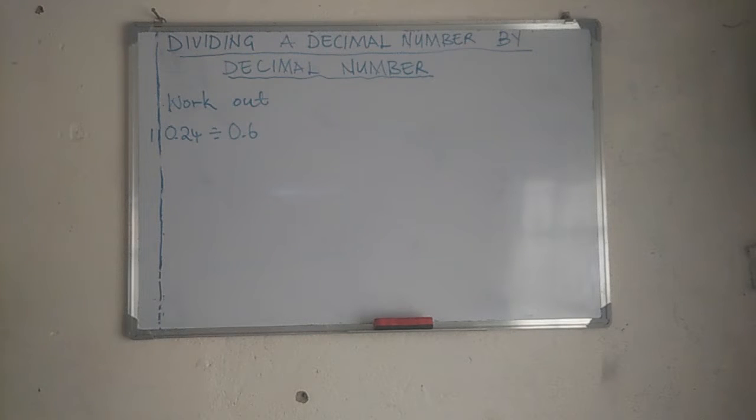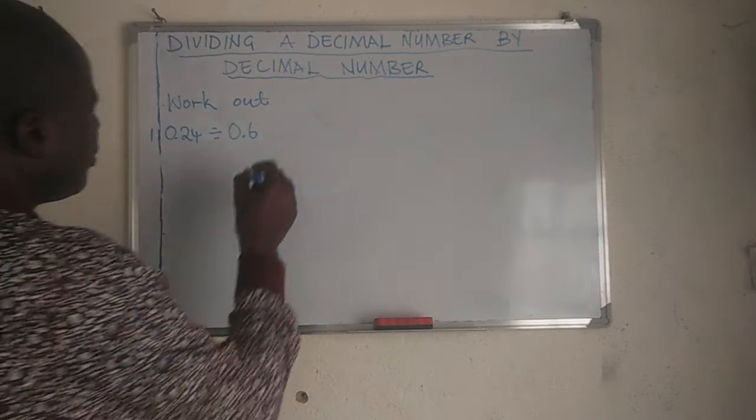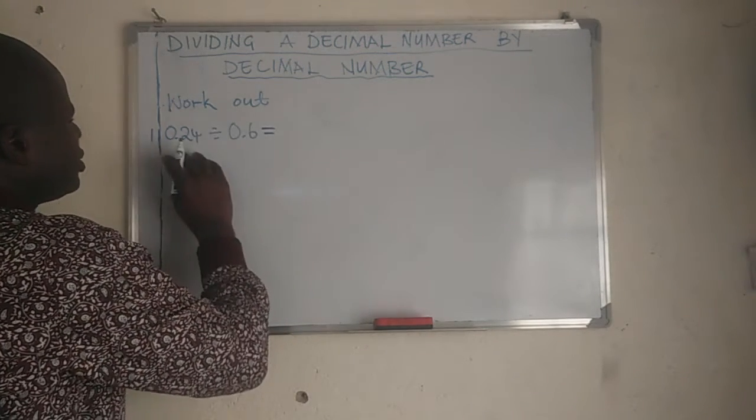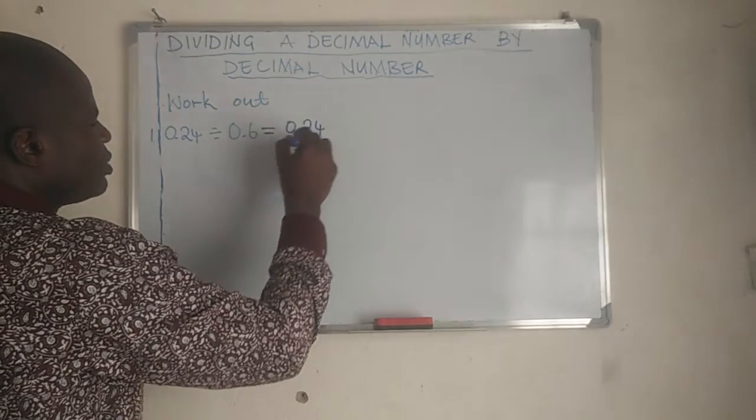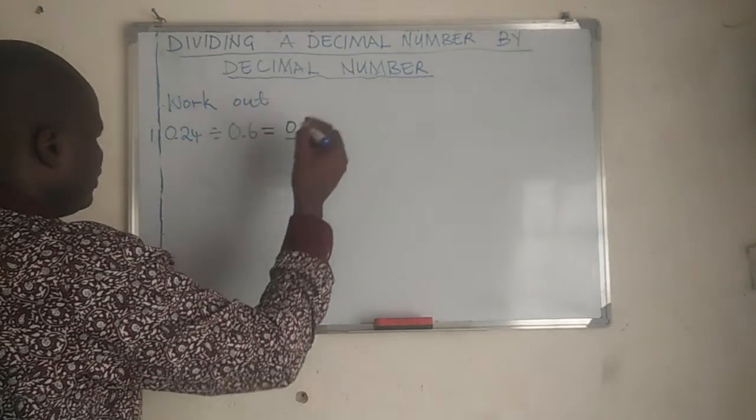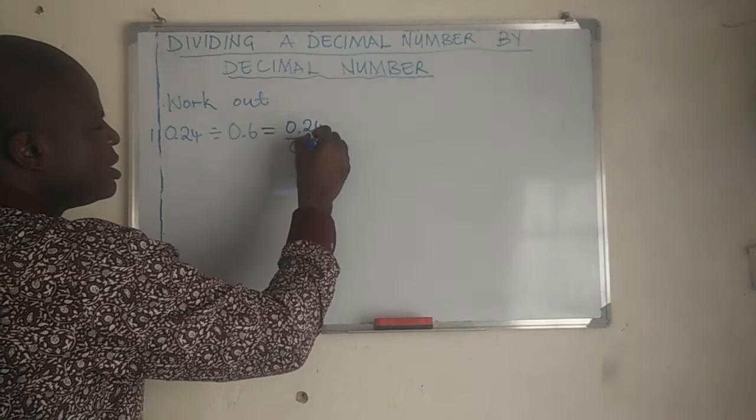Let's work out this one. First of all, I'm going to change this to fraction form: 0.24 over 0.6.